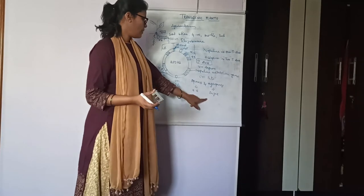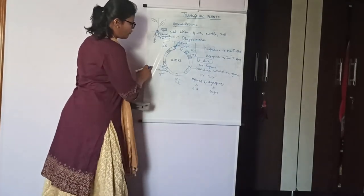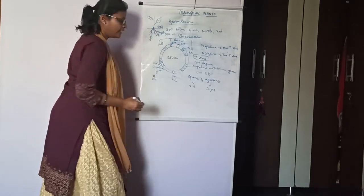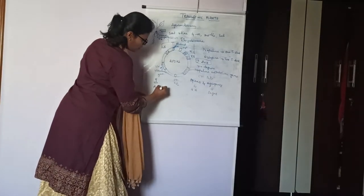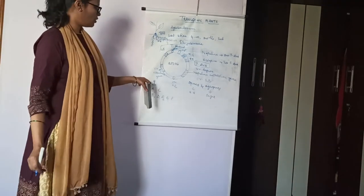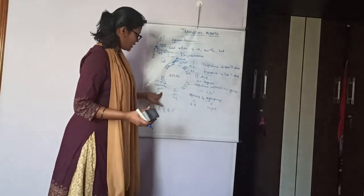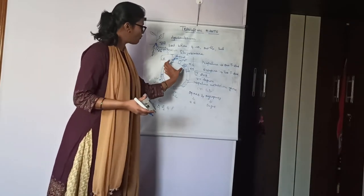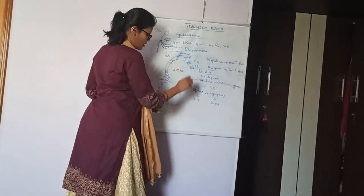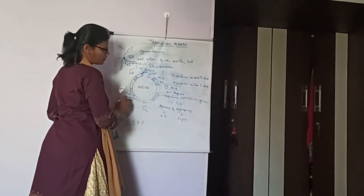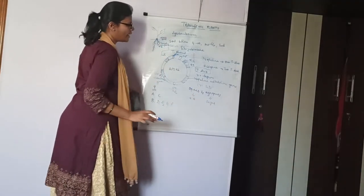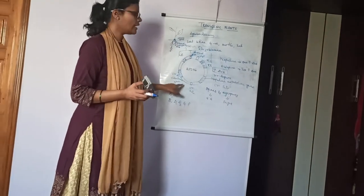The OCS gene helps in the production of opines and agropines. Opines are amino acid derivatives and agropines are sugar derivatives. These are utilized as carbon and energy source by the bacteria. Around 9 vir genes have been identified. These vir genes help in the transfer and integration of T-DNA into the plant genome. The ori is required for the replication process, and the opine metabolism gene helps in the uptake and metabolism of opines and agropines.